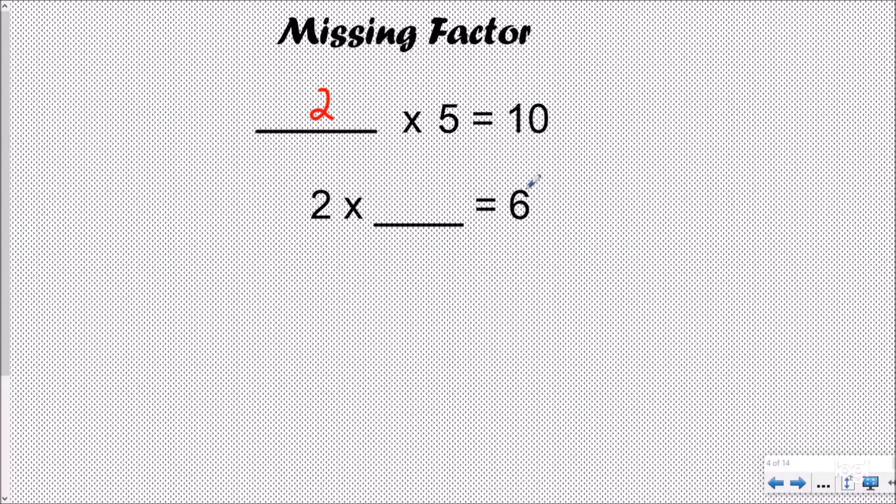For our product 6, if one of our factors is 2, what does our other factor have to be? 2 times what equals 6? Obviously the answer is 3. When we're talking about factors, we're talking about the numbers that you're multiplying together that give you a product.